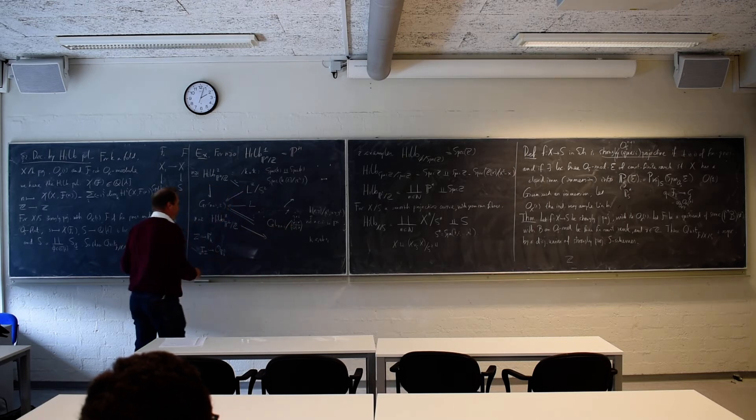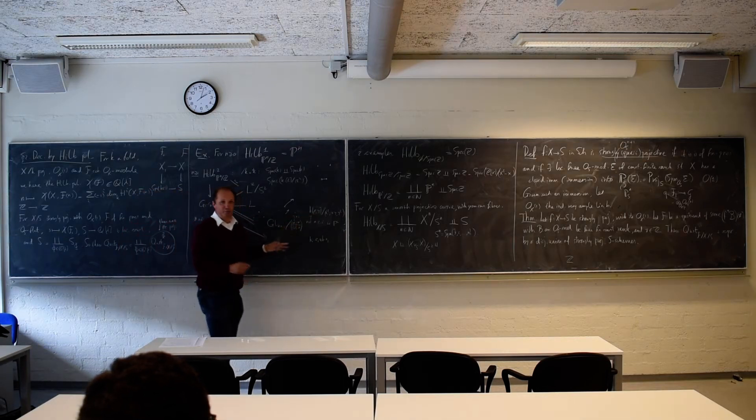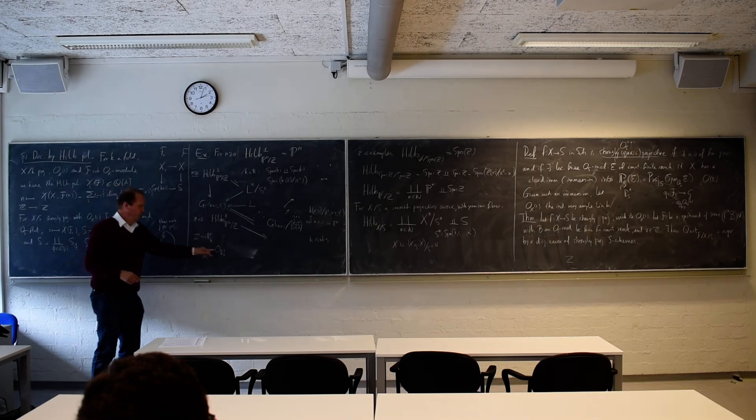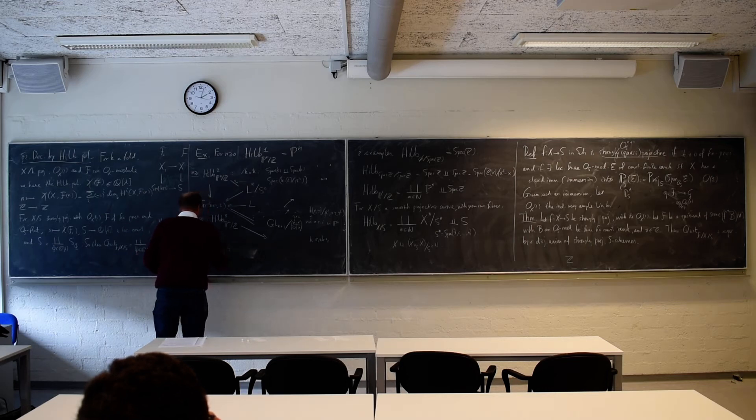So you have to take equations of higher degree, so that these three points, or these degenerate cases, impose the right number of conditions on the functions to vanish. So that starts, you twist this by two, like that.